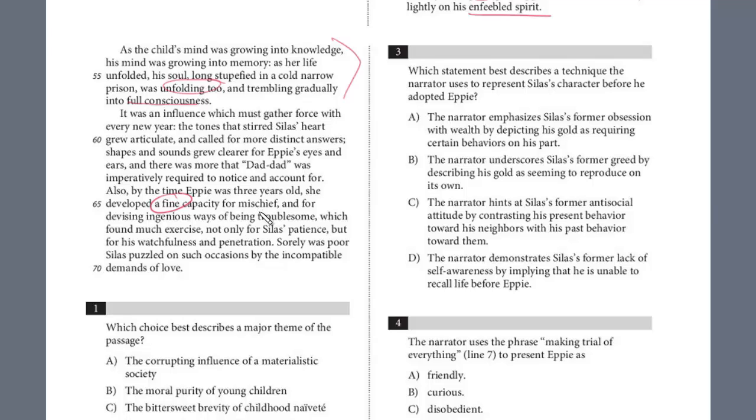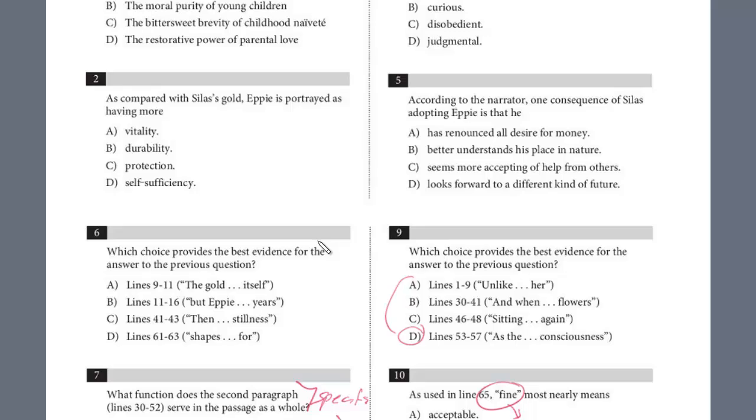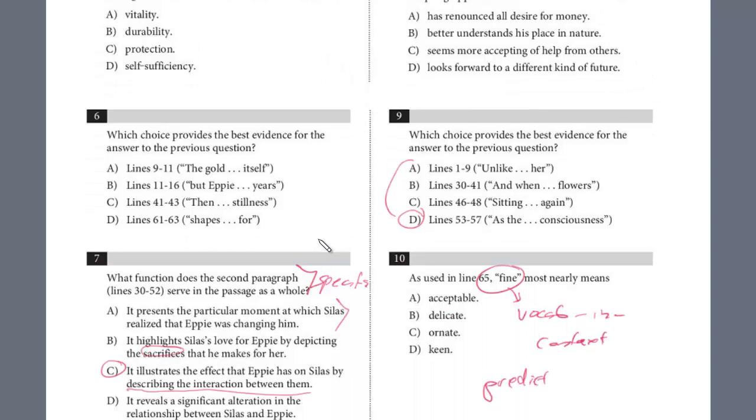You always want to try to predict it, but she really had this tendency and fine is really emphasizing that she was almost very sort of acute or had the sharp capacity for finding little trouble, not serious trouble, mischief, devising these really clever ways of being troublesome, which found much exercise for Silas's patience. So if you look at the answer, we're really looking for some type of sharp tendency. And we see acceptable or delicate, ornate means sort of ornamental or decorative. It's really just keen, right? Keen really means I had this sharp sense, so this keen mind. And the answer here is D.